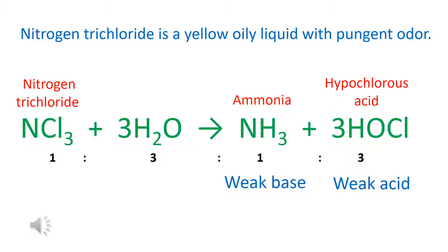With intermediate formation of hydrogen bond species, one nitrogen trichloride molecule reacts with three water molecules to produce one ammonia molecule and three hypochlorous acid molecules.